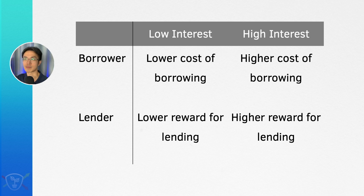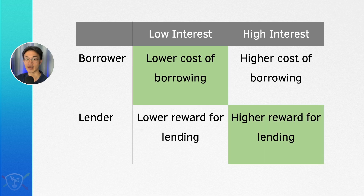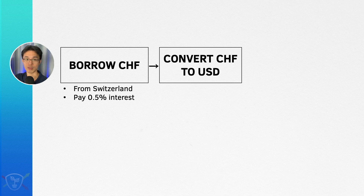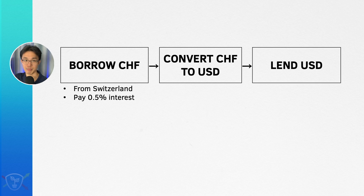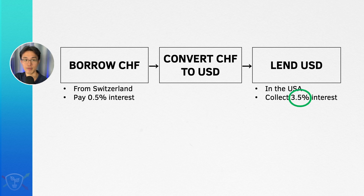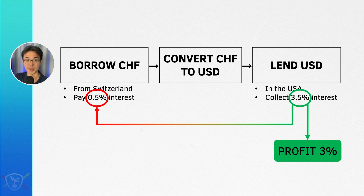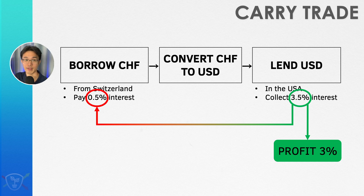This gives me an idea. What if I were to borrow money from a country where interest rates are low and then lend this money in a country where interest rates are high? For example, I can borrow Swiss francs from Switzerland and pay an interest rate of 0.5%, then convert this borrowed Swiss franc into US dollars and deposit it into a US bank where I can potentially earn up to 3.5% interest. I collect 3.5% on the USD deposited, use part of that to pay off the 0.5% interest on the amount borrowed in Switzerland, and net a profit of 3%. This process is also known as a carry trade or carried interest.